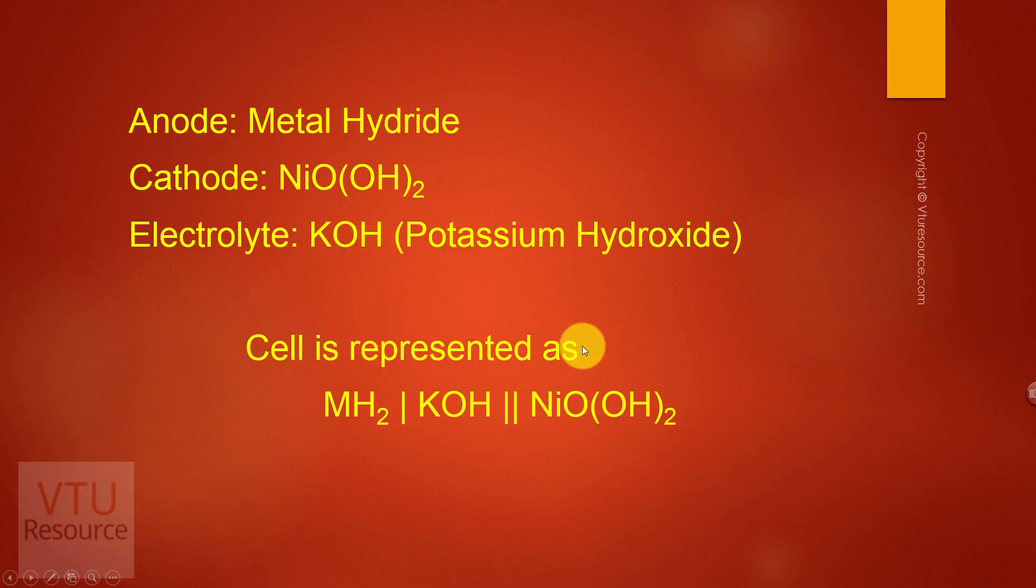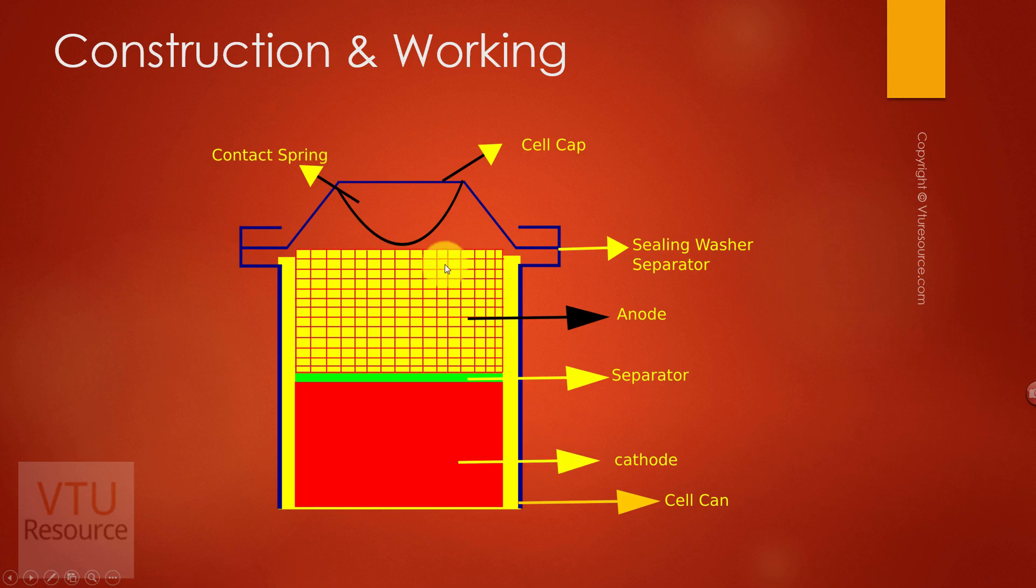The diagrammatic representation of nickel-metal hydride battery is as follows. Both the anode and cathode are made up of nickel foils.